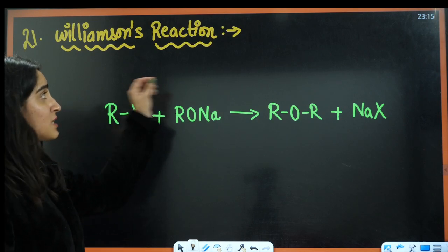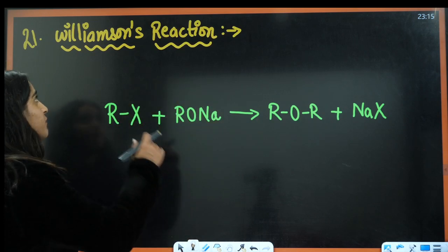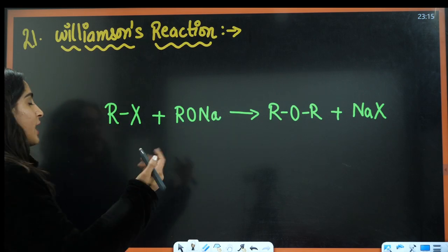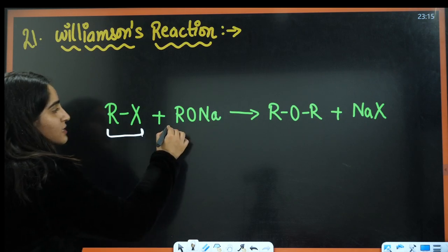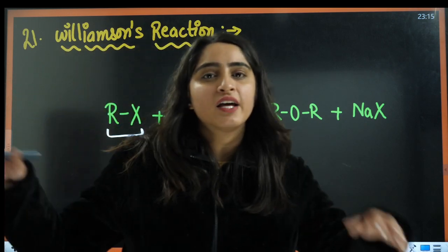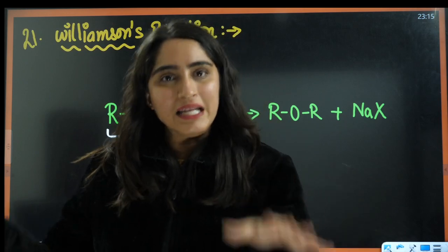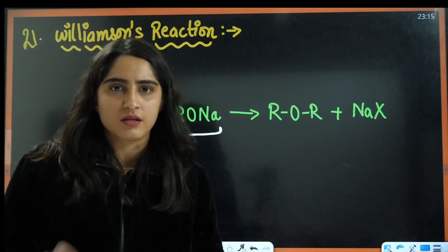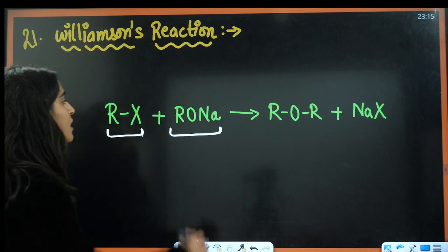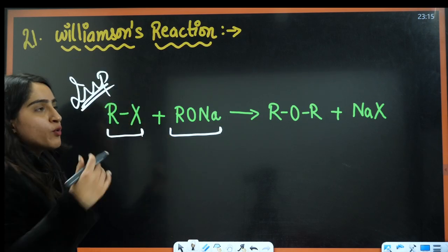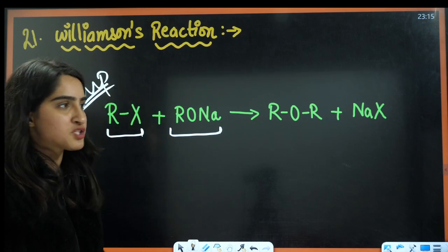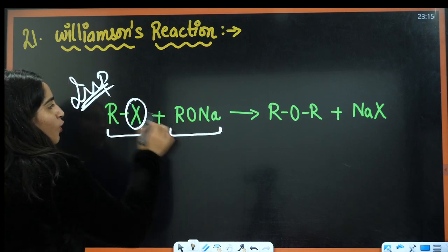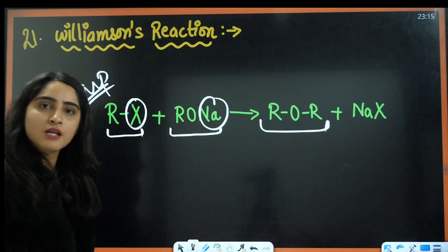Next is Williamson synthesis — not Williamson reaction. Here we have RX and RONa. For ether-related questions, either Williamson synthesis or the reaction of ether with HX will be asked. X goes with Na, and you get the formation of ether R-O-R.